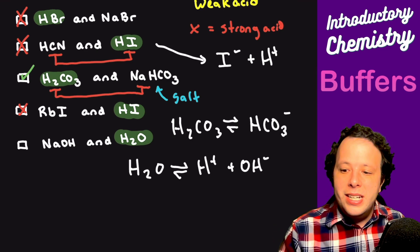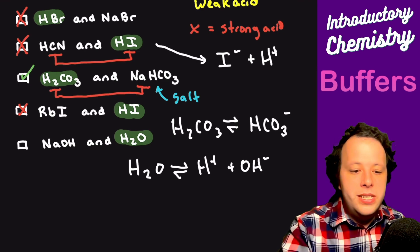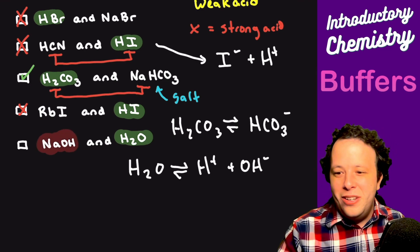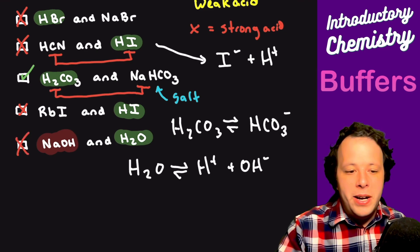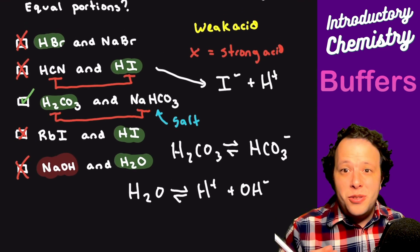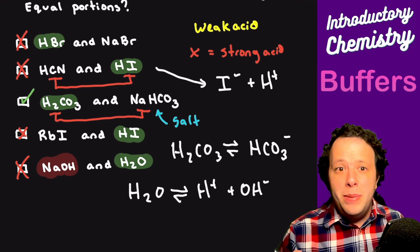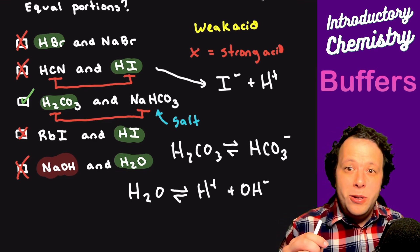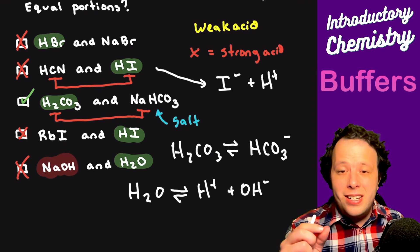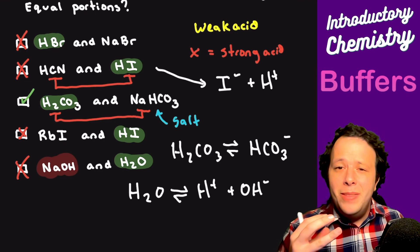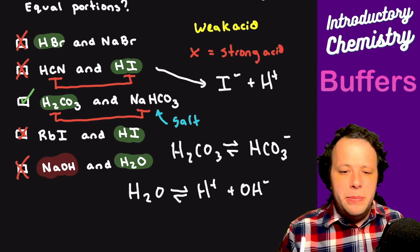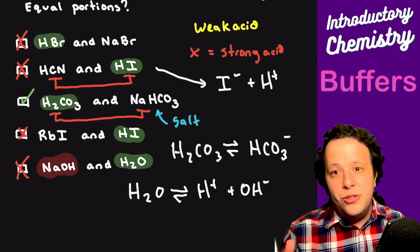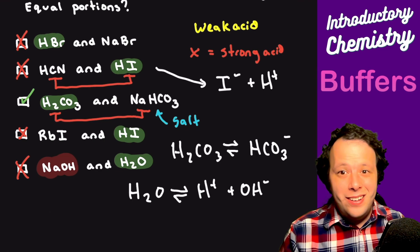So that's going to be a no as well. We found our choice with carbonic acid because that is with its salt. So this is how you pick out the correct buffer. It needs to be a weak acid with its conjugate base salt. And you can do the same with a weak base and its conjugate acid as well. But generally it's more common to use a weak acid. Let's take a look at another example.